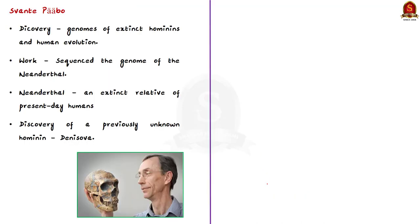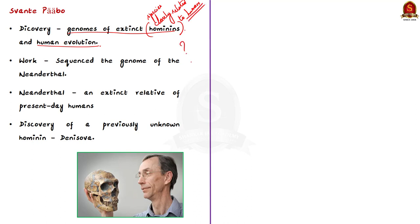Pääbo will be awarded the Nobel Prize for his discoveries concerning the genomes of extinct hominins and human evolution. Hominins are species closely related to humans. Humanity has always been intrigued by its origins — questions like: where did we come from? How are we related to those who came before us? What makes us? Is Homo sapiens different from other hominins? All these questions always come to mind.